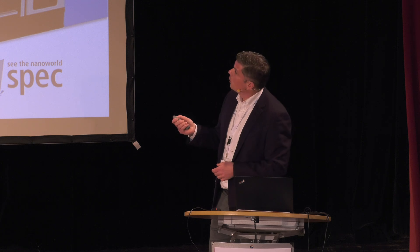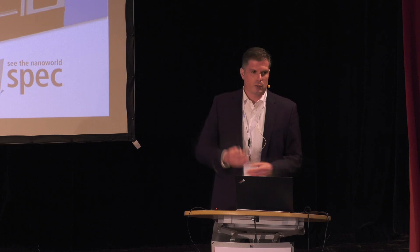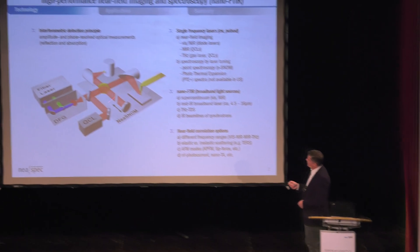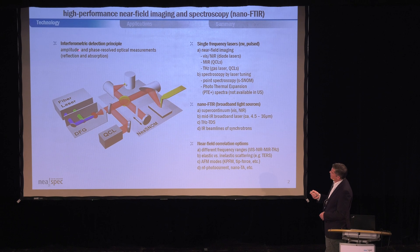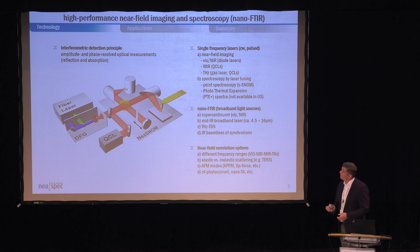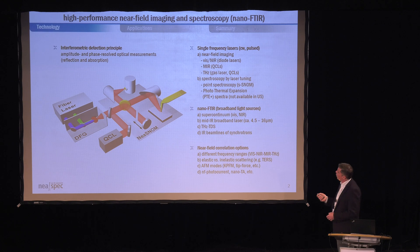The idea is now to show you a few initial results to see what kind of system configuration you can use and what kind of results can actually be obtained. As Sascha pointed out in quite nice detail, we use a system configuration where we illuminate the AFM probing tip with the help of a parabolic mirror. We can use an interferometer or an interferometric detection principle to measure the amplitude and phase of the scattered light, which is related to the reflection and absorption of the measured sample materials. On top of this, you can couple different kinds of sources to this interferometer, and in the last few years we have been quite successful addressing different system configurations.